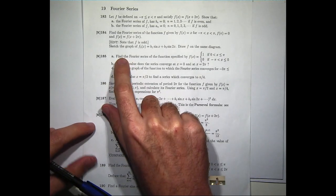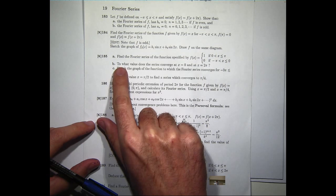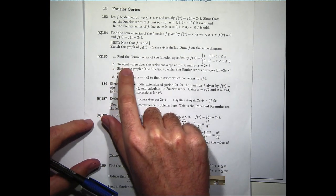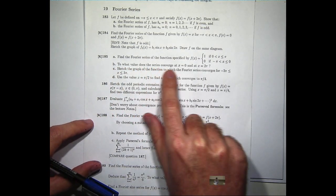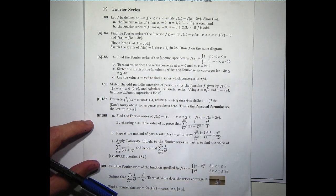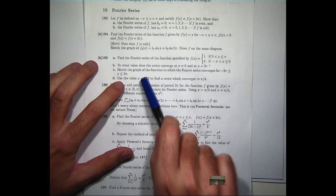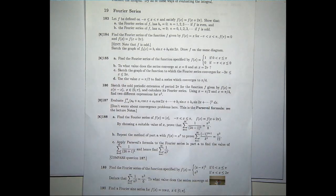185. Find the Fourier series for this function here. You're asked to determine the value that the Fourier series converges to at these points, sketch the graph of the function to which the Fourier series converges to on this interval, and use the value x equals pi over 2 to formulate some value of an infinite series.